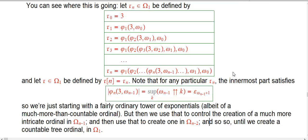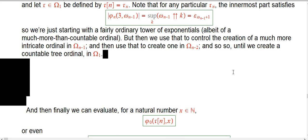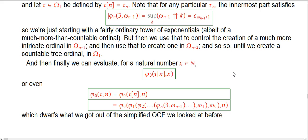So we're starting with a fairly ordinary tower of exponentials of an uncountable ordinal, something in the ω_n class. We use that to control the creation of a much more intricate ordinal in one class lower, and then a much more intricate ordinal in ω_{n-2}, etc. We stop when we get a countable tree ordinal, although actually we don't quite stop because then we're going to use that countable guy to create a number in just the ordinary way using f, or equivalently φ_0.